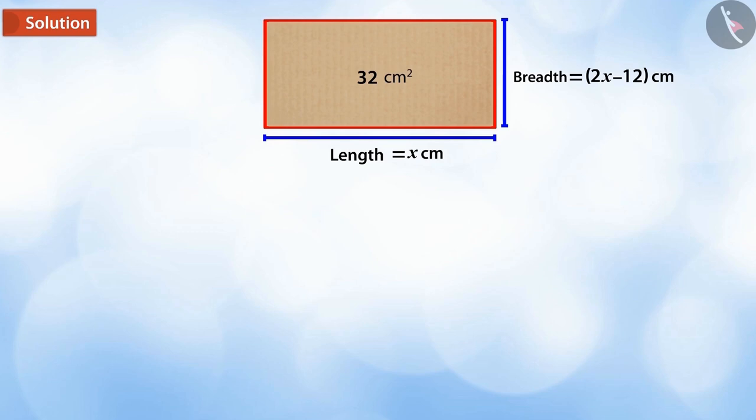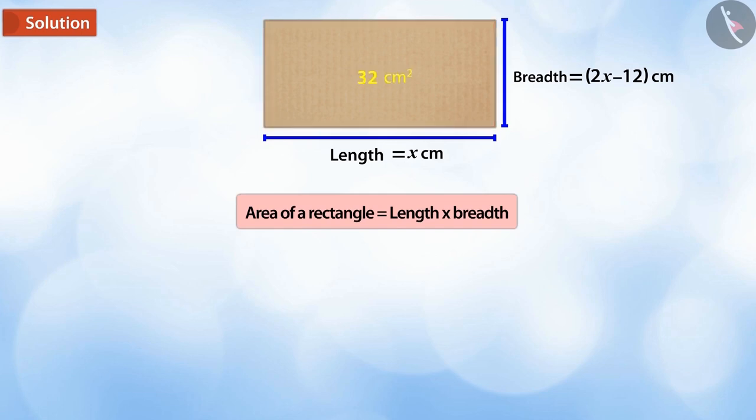We know that since the box is rectangular, we can use the formula for area of rectangle. Here, the area of the box given is equal to 32 square centimeters. Putting all the above values in the formula of area, we get 2x² minus 12x minus 32 is equal to 0.